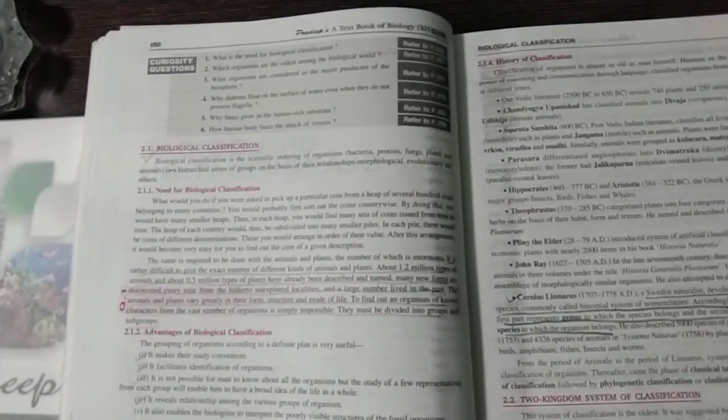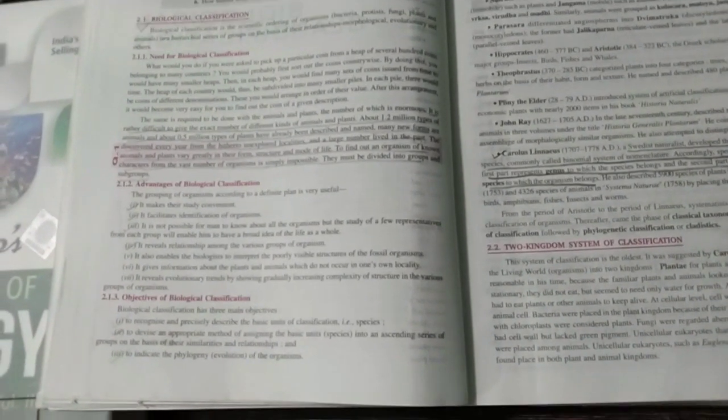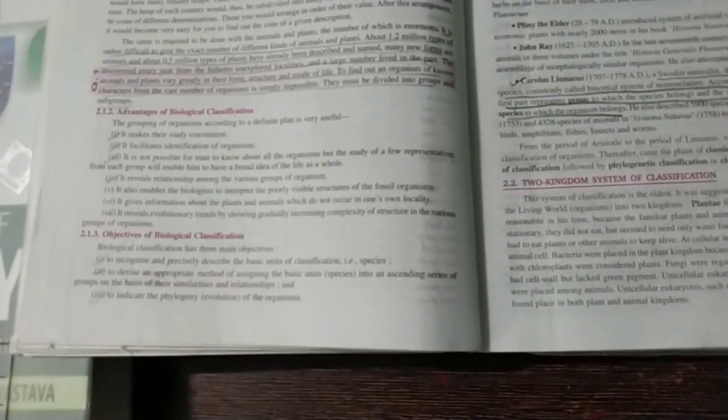These are first curiosity questions. These questions are given and then the answers are provided. First is biological classification definition is there, and then the need of biological classification, which you will not find in NCERT. Advantages of biological classification is given point-wise. You can easily understand and mark up also. Objectives of biological classification is also given.